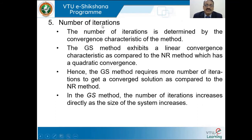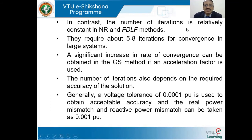Number of iterations: the number of iterations is determined by the convergence characteristics of the method. The Gauss-Seidel method exhibits a linear convergence characteristic, as compared to the NR method which has a quadratic convergence. Hence, the Gauss-Seidel method requires more number of iterations to get a converged solution as compared to the NR method. In the Gauss-Seidel method, the number of iterations increases directly as the size of the system increases. In contrast, the number of iterations is relatively constant in NR and FDLF methods, requiring about 5 to 8 iterations for convergence in large systems.